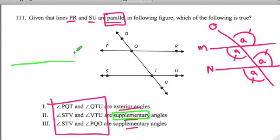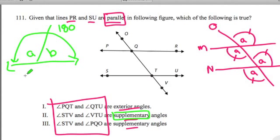So the way to determine if something is supplementary is, do these two angles add up to form 180 degrees? And basically that means they form a straight line. So two angles are supplementary when they add up to form 180 degrees or form a straight line.